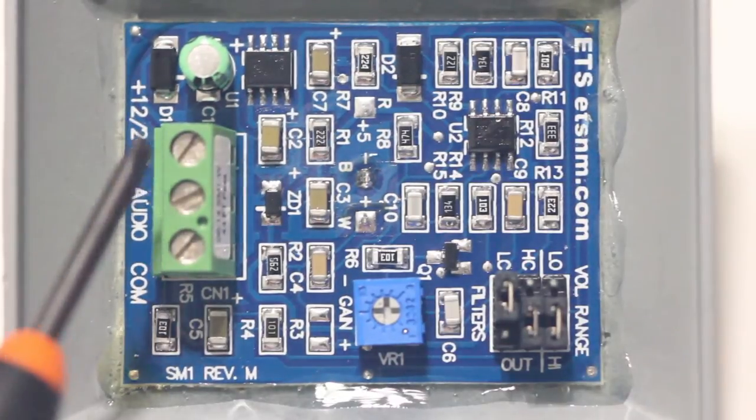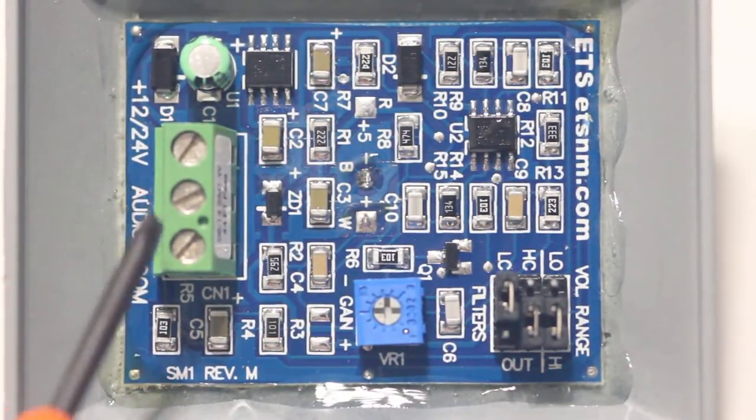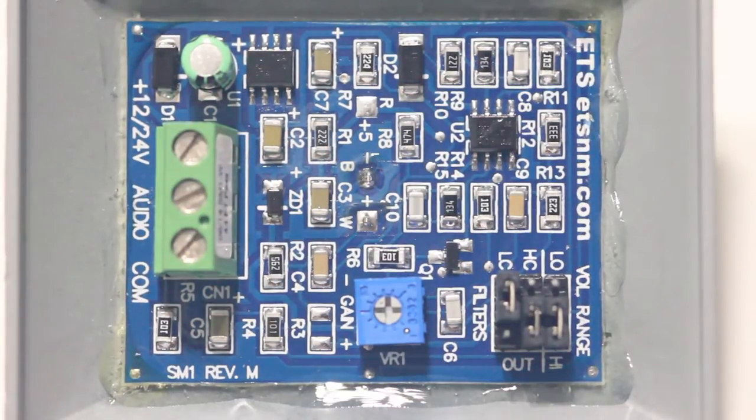And finally this green plug on the end here is basically how you connect the power and ground and audio connections. We'll get back to that later when we talk about how to use this kit.